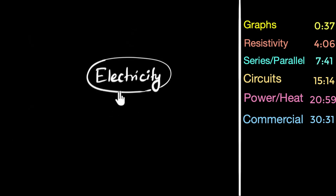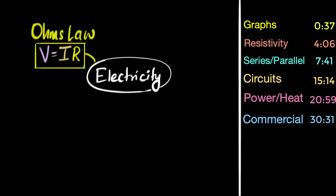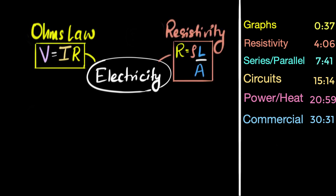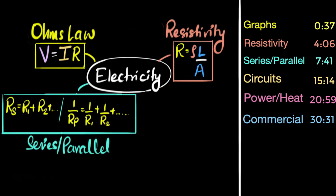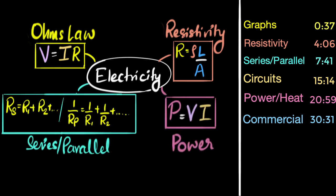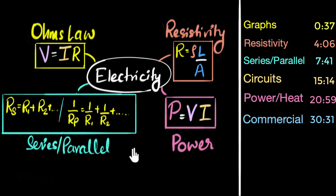To solve various problems from the electricity chapter, we need to understand and remember four formulae: Ohm's law, a formula on resistivity, series and parallel resistance formula, and the power formula. All the other formulae you might see in your book can be derived just by using these four — that's what makes these four the most important ones. In this video, we will look at each one in detail and use them to solve certain board-type questions. You can see the index on the right-hand side, so feel free to jump to any specific topic.